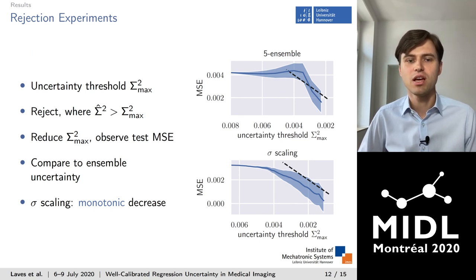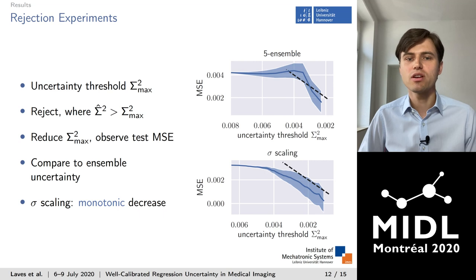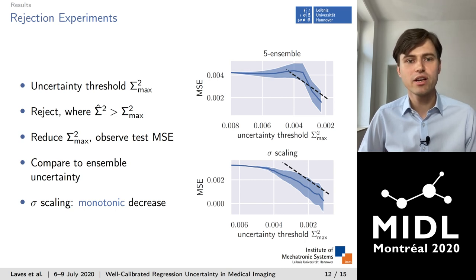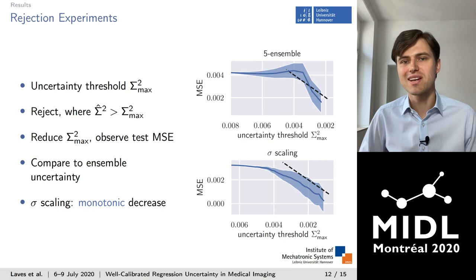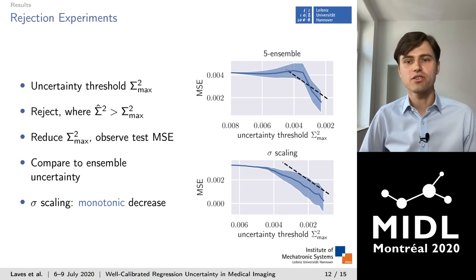Next we apply the well-calibrated models to detect and reject uncertain predictions. An uncertainty threshold is defined and all predictions from the test set are rejected where the uncertainty is higher than this threshold. We lower the threshold stepwise and observe the resulting mean MSE. It was stated in the literature that deep ensembles provide better calibrated uncertainty than Monte Carlo dropout, so we compare uncertainties from a five-model ensemble. The ensemble shows an increase in test MSE first and then a sudden decrease, whereas after sigma scaling the MSE decreases monotonically with the uncertainty threshold. We conclude that uncertainty from calibrated Bayesian nets is more suitable for detecting unreliable predictions.